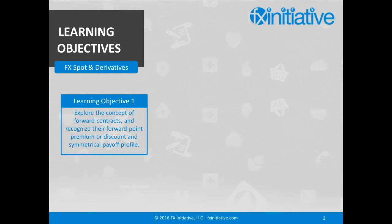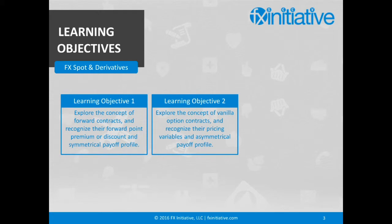The second learning objective is to explore the concept of option contracts and recognize their pricing variables and asymmetrical payoff profile. The concept of vanilla option contracts, including call options, which represent the right to buy a particular currency, and put options, which represent the right to sell a particular currency, will be discussed.